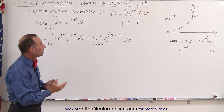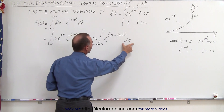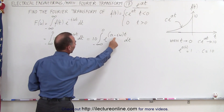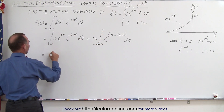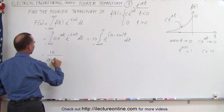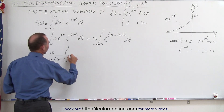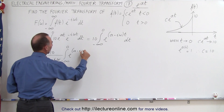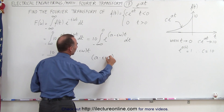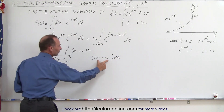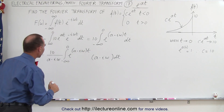To integrate that, we need the proper integrand, which means we're missing the differential. We have to multiply the integrand by a minus i omega and then divide by a minus i omega. So this becomes equal to 10 divided by a minus i omega, times the integral from minus infinity to zero of e to the a minus i omega times t, times a minus i omega dt.